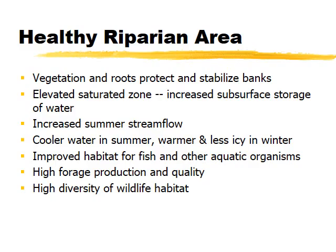A healthy riparian area also has an elevated saturation zone with subsurface water close to the surface, and it has summer stream flow. When riparian areas go out of condition, you'll see little water in the stream, and people who are repairing their riparian area often comment that the river is flowing longer into the summer. Generally, healthy riparian areas have cooler water in the summer, warmer water in the winter that reduces ice, improved habitat for fish and aquatic organisms, high quality forage, and high diversity for wildlife.